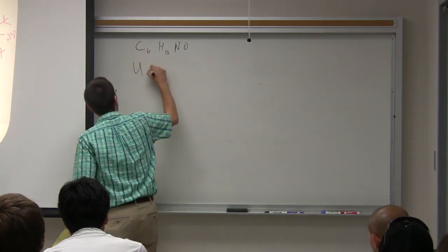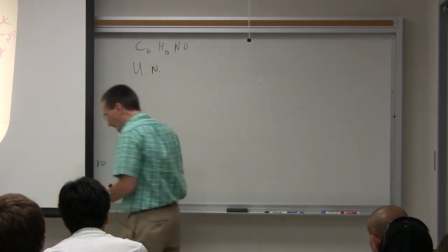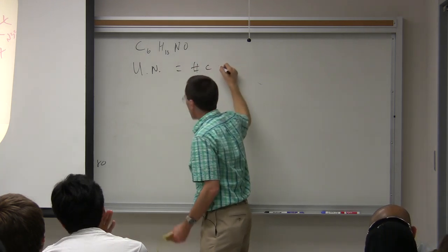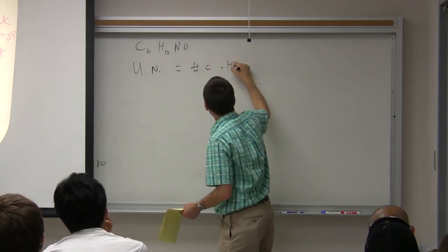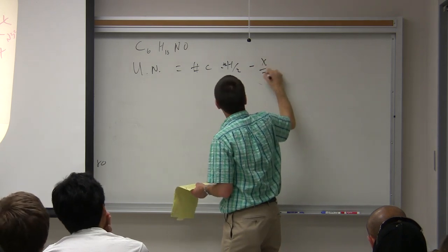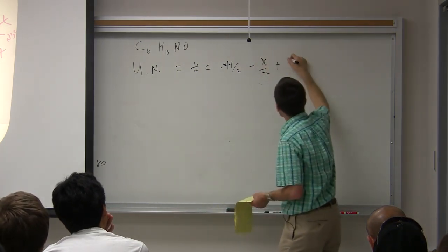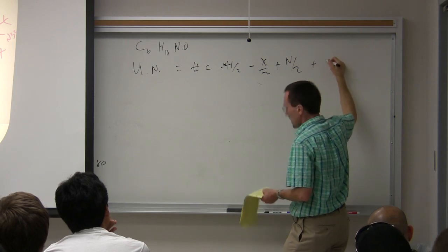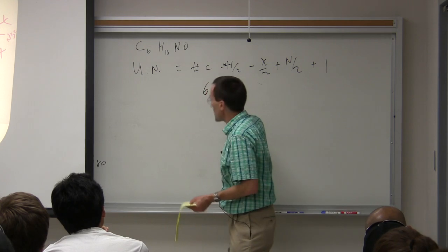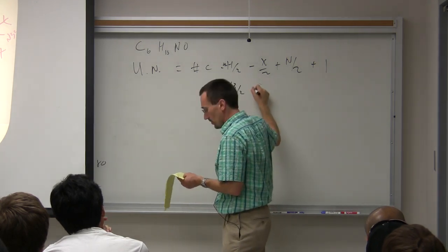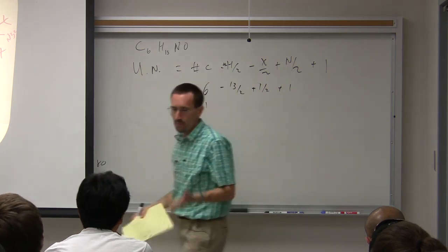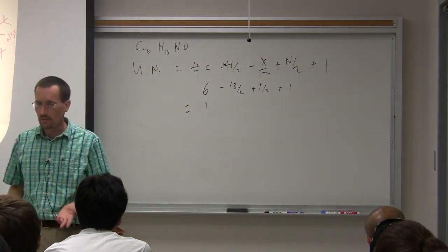There are a couple of ways you can do it. Honestly, I never do it the way I'm about to write it. The unsaturation number is the number of carbons minus the number of hydrogens over 2 minus the number of halogens over 2. I hate formulas. I don't even keep formulas in my head. Plus the number of nitrogens over 2 plus 1. And if you plug in, that's 6 minus 13 over 2 plus 1 over 2 plus 1 equals 1, which is one double bond, a carbonyl group. I never do things this way.